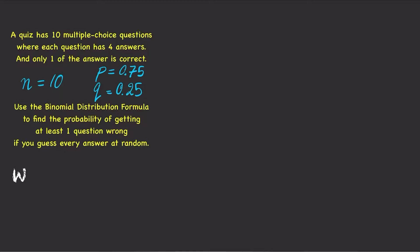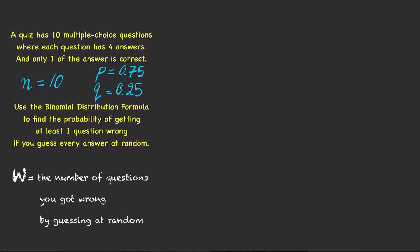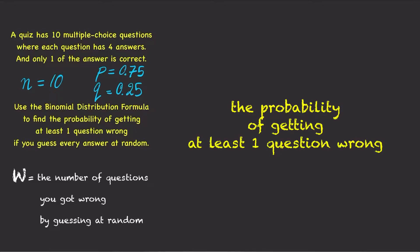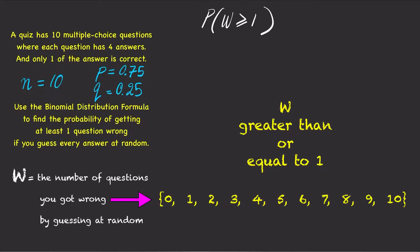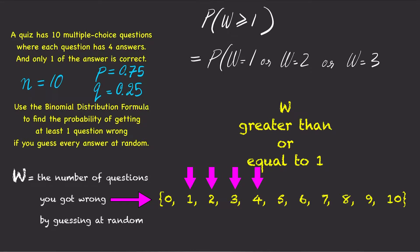If we let w stand for the number of questions you got wrong by guessing every answer at random, then we can write the probability of getting at least one question wrong as P(w ≥ 1). W greater than or equal to 1 means w could be equal to 1, or 2, or 3, or 4, or all the way up to w equals 10.